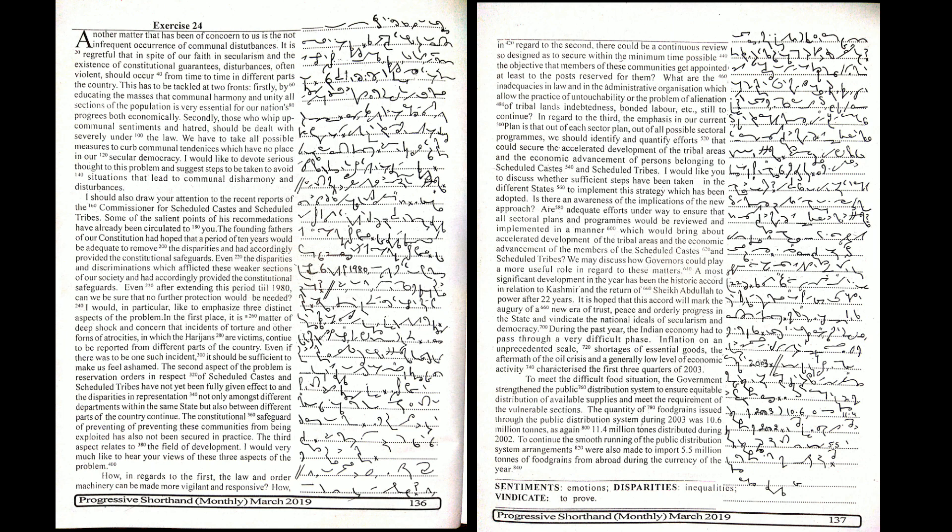The second aspect of the problem is reservation orders in respect of scheduled castes and scheduled tribes have not yet been fully given effect to, and the disparities in representation not only amongst different departments within the same state but also between different parts of the country continue. The constitutional safeguard of preventing these communities from being exploited has not been secured in practice. The third aspect relates to the field of development.